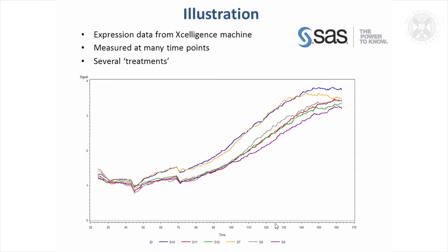I'm going to illustrate some of the SAS procedures using a data set. This data was recorded from Celligent's machine. I don't know a great deal about it except that there were samples of cells and they were given different treatments — so there were six different treatments. The machine measured a signal at lots and lots of time points, and each of these colours is a different treatment, showing the means for each of the treatments at each time point.